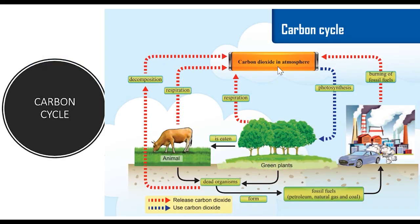The carbon cycle is the cycle that maintains the content of carbon dioxide in the air by continuously taking carbon dioxide from the air and also returning it to the air. The content of carbon dioxide in the atmosphere is maintained by processes such as photosynthesis, respiration, combustion, and decomposition.